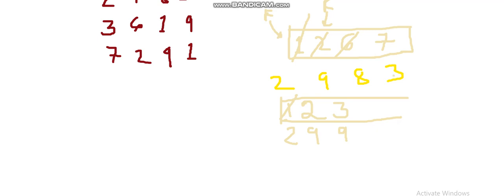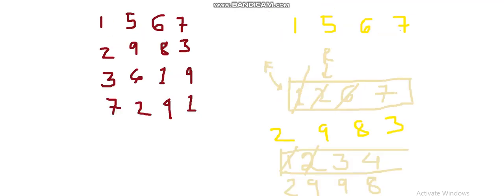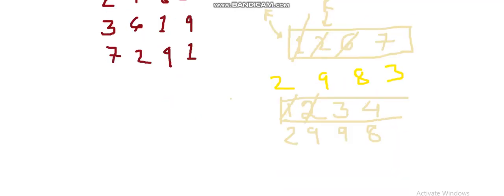When we try to push 3, index 2 (value 9) satisfies: 4 minus 2 equals 2, so it should be popped as it's out of the window. Then we check if 8 is greater than 3 — it is, so we don't pop it. The sliding window maximum for this position is 8. That's how we do the sliding window maximum in a 1D array.